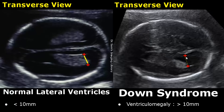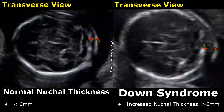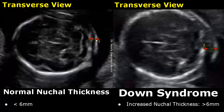The normal nuchal thickness in the second trimester must be less than six millimeters. It can be measured in the transverse view of the fetal brain at the level of the cerebellum. Here is an image of an increased nuchal thickness — we can see an increased measurement — which may be seen in a fetus with Down syndrome.